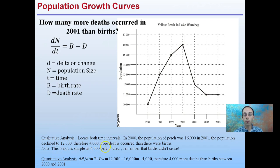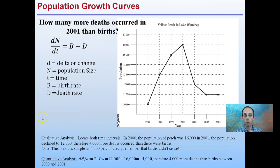It's not as simple as 4,000 perch died. Remember that births didn't cease — we're looking at the difference between our birth rate and our death rate. So while births still occurred and there were yellow perch being born, the difference between those that died and those that were born was 4,000 more deaths.